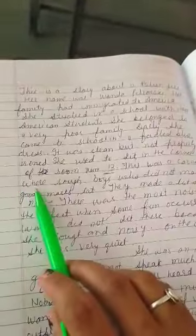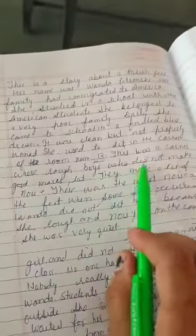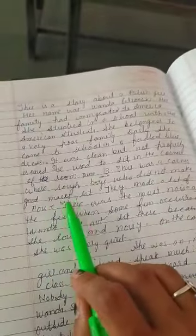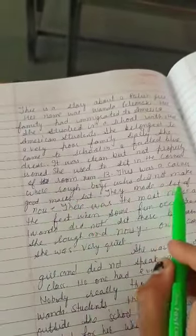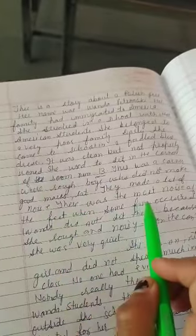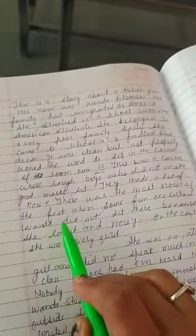She used to sit in the corner of the room, room number 13. In which room she used to sit? Room number 13. This was a corner where rough boys who did not make good marks sat. They made a lot of noise there.